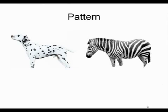On the left side, you can see a Dalmatian dog. It consists of multiple spots, a pattern of spots. On the right side, we can easily identify a zebra. It consists of multiple stripes, a pattern of stripes.